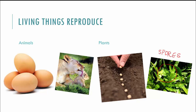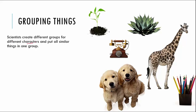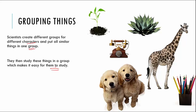Now that we have seen so many characteristics, we need to talk about how we can group things into living and non-living. When scientists tried to study all things around us, it became very difficult for them to remember all of them. So what they did to make it easier, they started grouping things into various classes. Scientists created different groups for different characters and put all the similar characters under one particular group, and found that it was a lot more easier to study things once they were grouped.